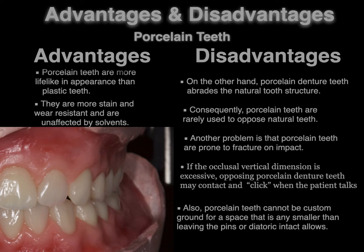Porcelain teeth cannot be custom ground for a space any smaller than what leaves the pins or diatorics intact. Restorative space is limited. Acrylic or plastic denture teeth are probably the best route because they can be ground and adjusted while still maintaining the chemical bond to the denture base. With porcelain teeth, if you grind too much and lose the diatorics or pins, the tooth no longer has any retention and will pop out.